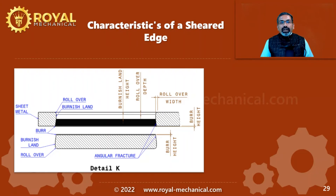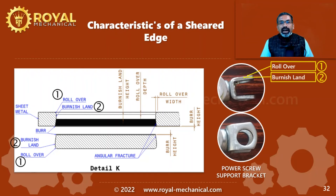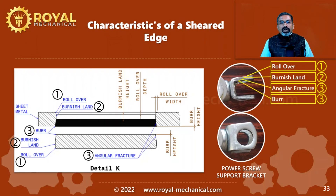The punching theory or shearing theory is not just theory — practically, you can observe certain typical characteristics of the sheared edge. For example, on the power screw support bracket of a car scissor jack, you can observe the rollover formed during the plastic deformation phase, the burnished land formed during the penetration phase, and the angular fracture and burr formed during the fracture phase. The rollover, burnished land, angular fracture, and burr are the typical characteristics of the sheared edge. Functionally critical components created using the shearing operation must undergo deburring.